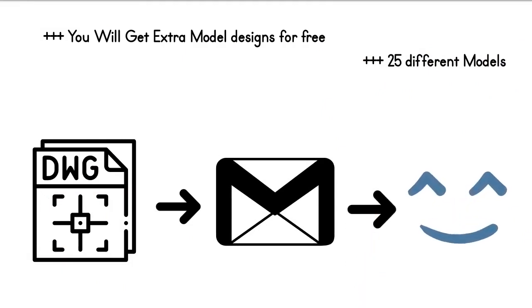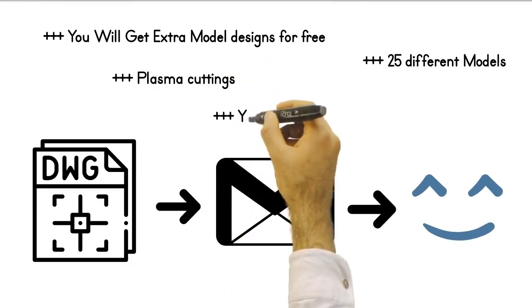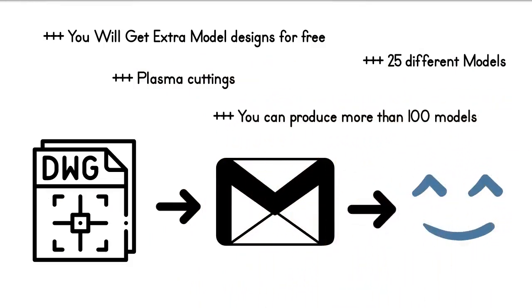For example, angular balcony bay window mold. When you start using these molds in the plasma cutter in your city, you will be able to produce hundreds of different models.